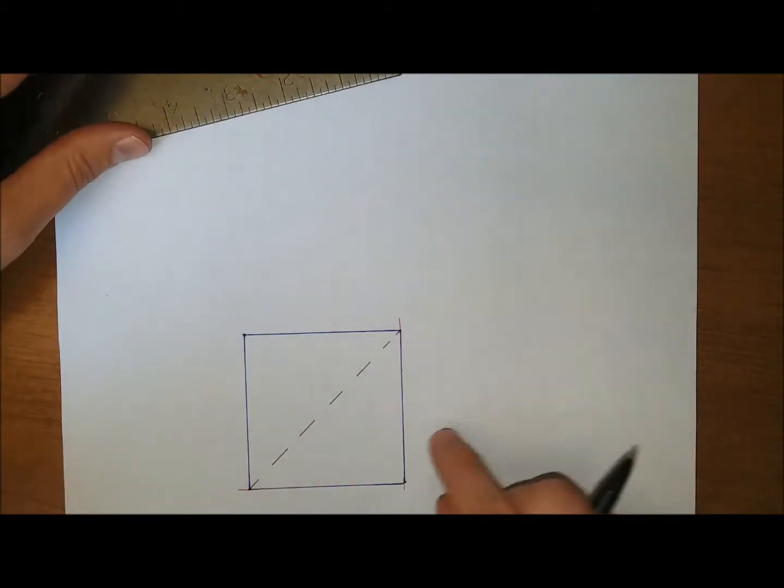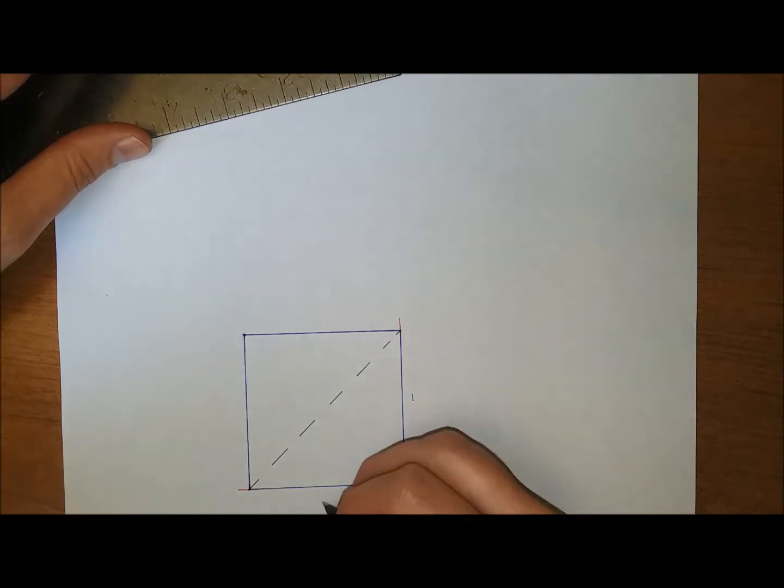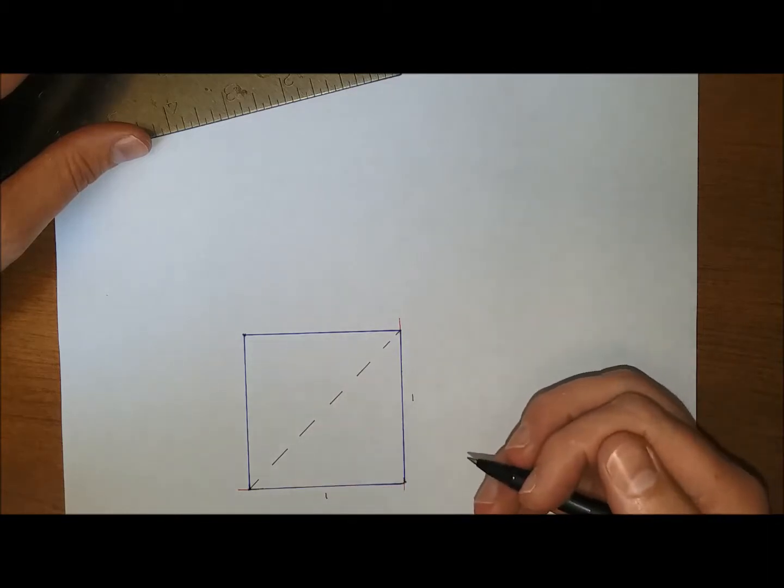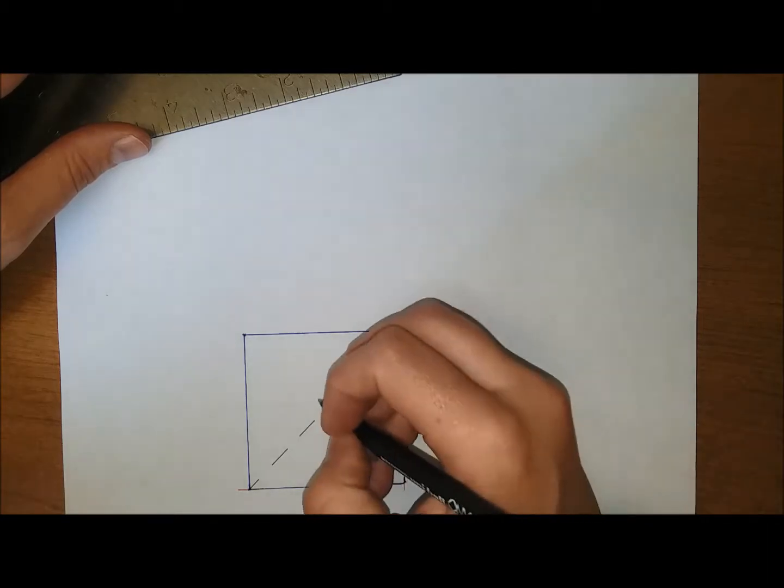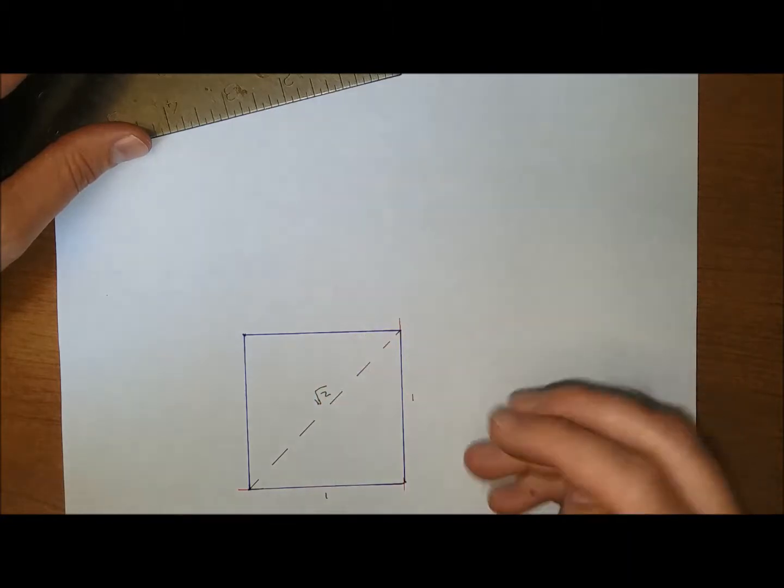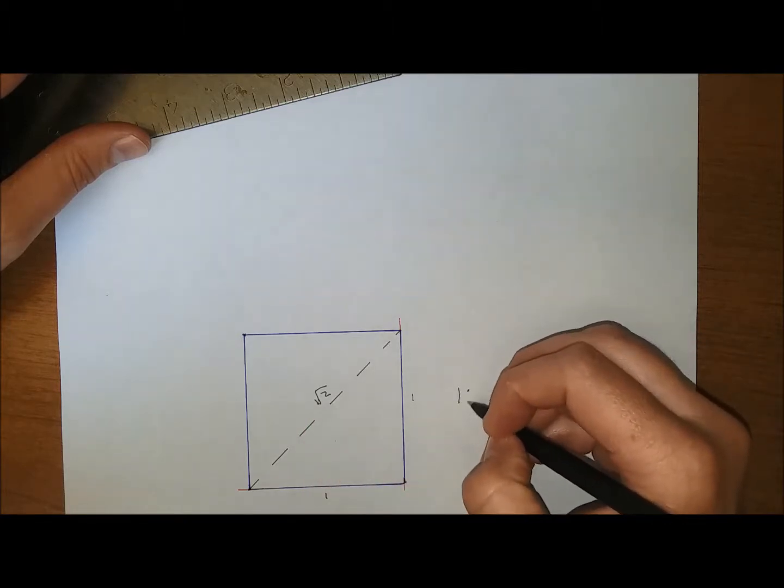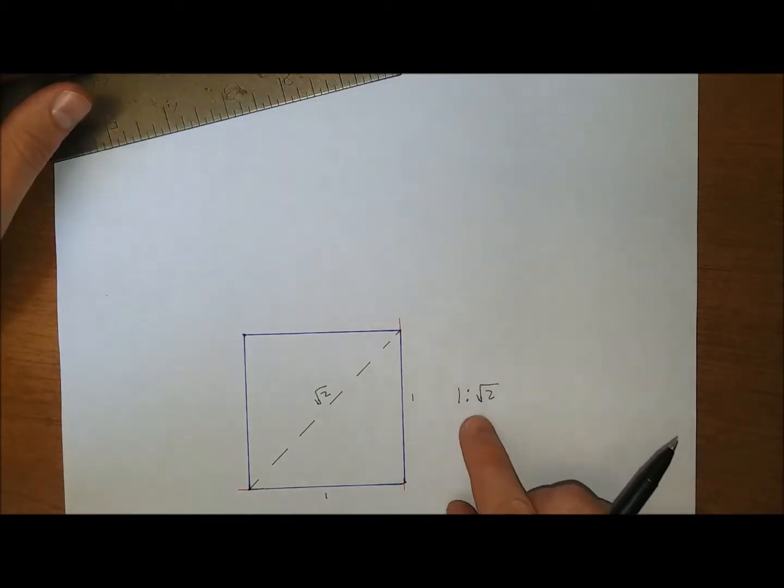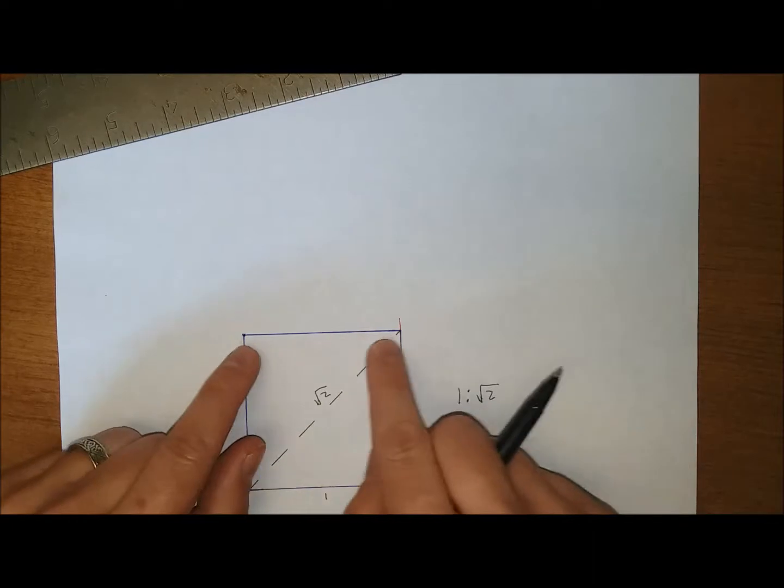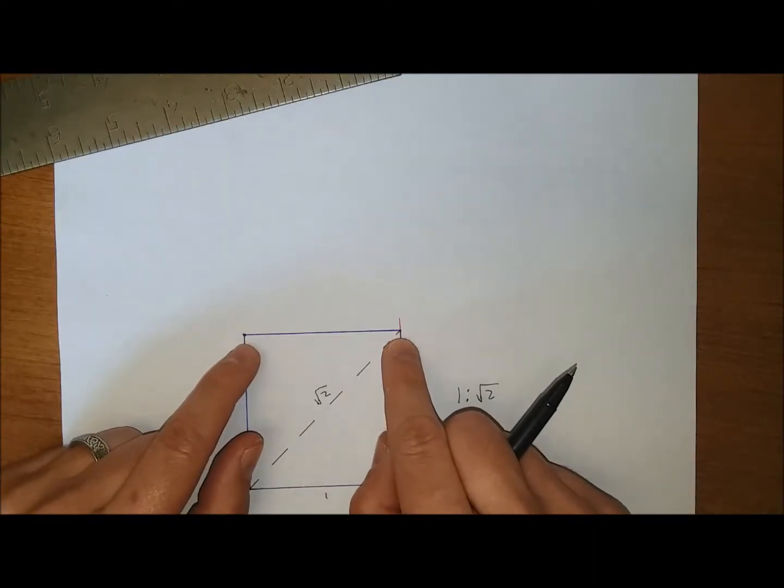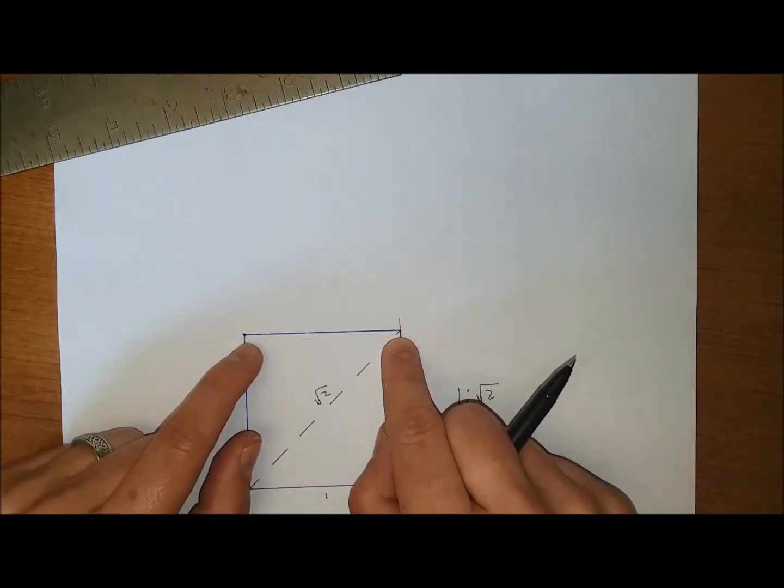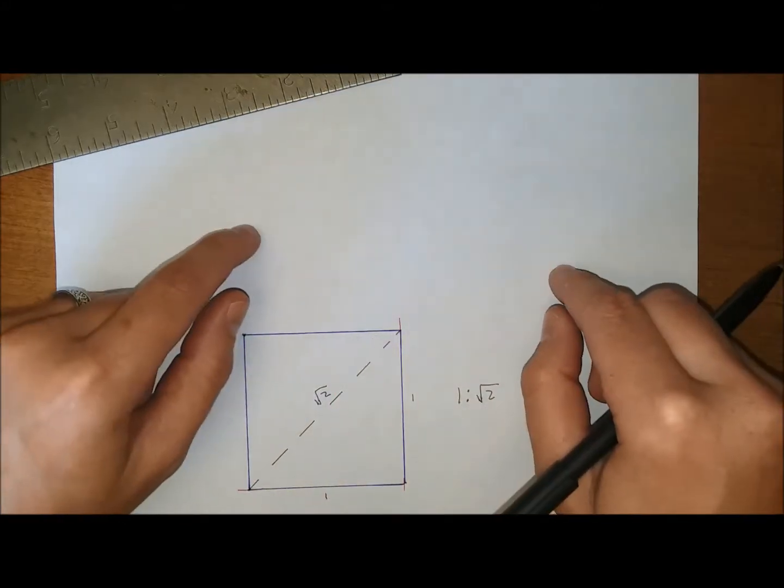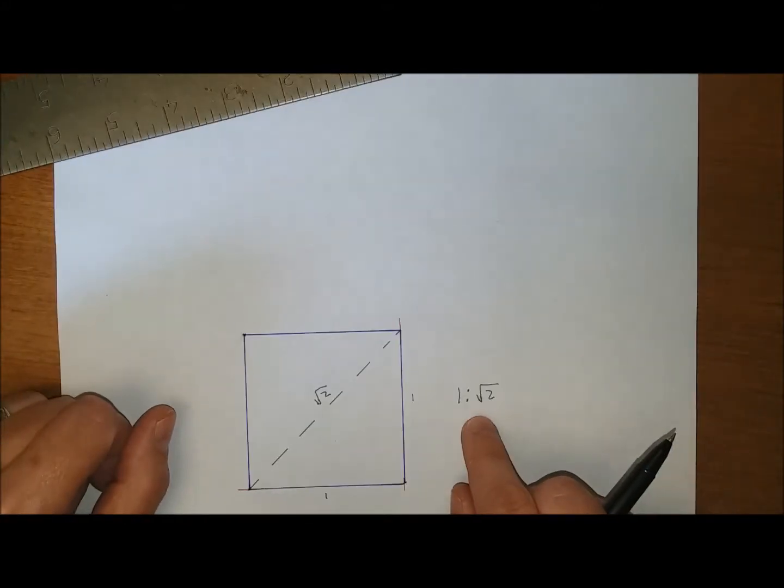What this gives us is if each side is unit length one, whatever that happens to be, the side of this hypotenuse by Pythagorean's theorem a squared plus b squared equals c squared gives us square root of two. So the ratio between the hypotenuse and the side is one to the square root of two. This entire cathedral, the Norn cathedral for example, is based on this one ratio one to the square root of two. So the side of the square is going to be a base unit and every other part of the cathedral is going to be a ratio between this base unit and every other unit based on this one to the square root of two.